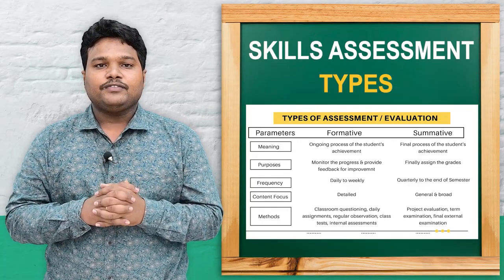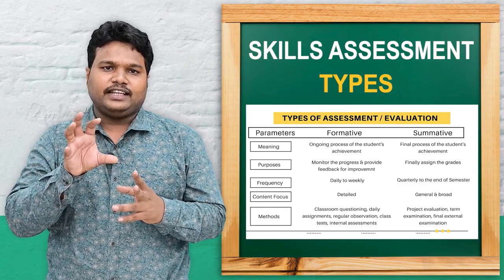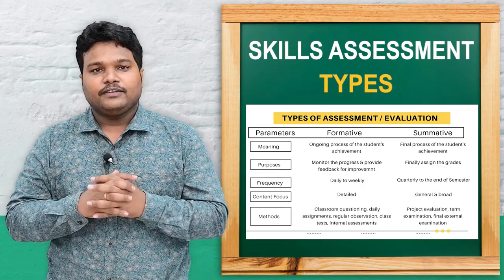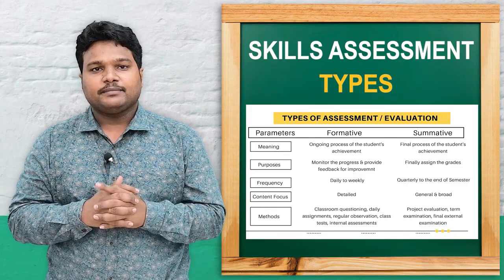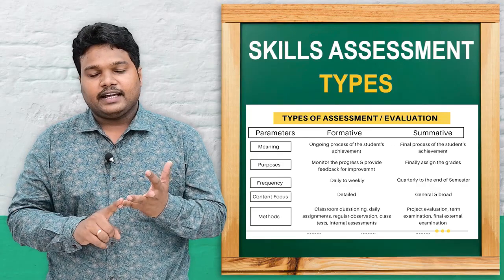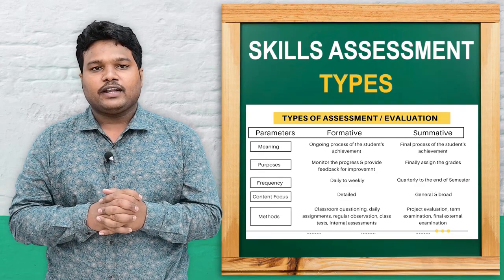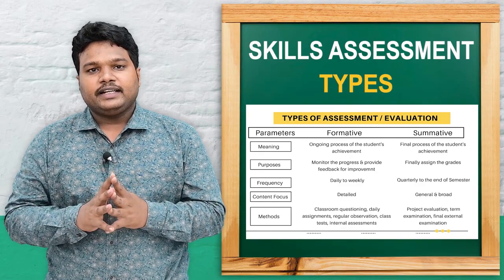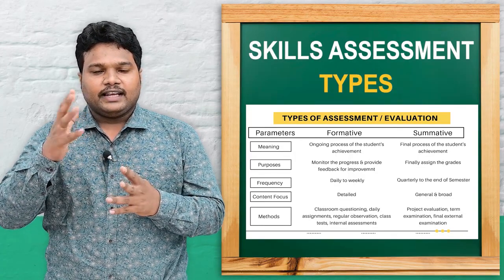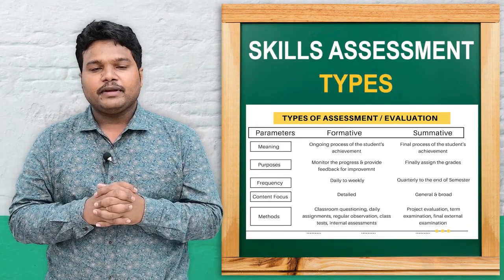Formative assessment focuses on smaller content — two, three, or four units — while summative assessment covers the whole syllabus. Methods used for formative assessment include slip tests and unit tests, while methods for summative assessment include practical exams, clinical examinations, and final practical examinations.